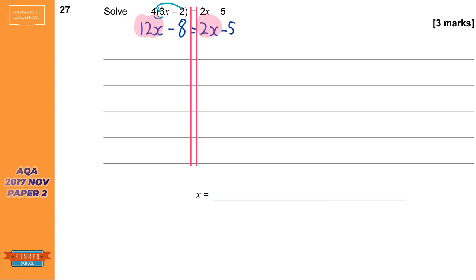So we need to get rid of the 2x from the right-hand side. So to do that, we're just going to take away the 2x from the right-hand side. But as always, we've got to do the same to the left. So here we've got 12x and we're taking away 2x, so that just leaves 10x. That minus 8 has nothing to do with it, it's just going to sit there. That 2x is gone, so 2x take away 2x is nothing. But that minus 5 is still there.